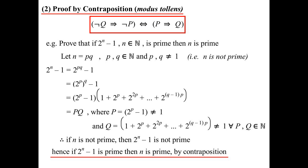Those last two words — 'by contraposition' — are really important. It's a bit like induction, where we say 'by induction we've proven the result.' Same thing here: how did you jump from there to here? By contraposition. You let them know — that's part of your proof.